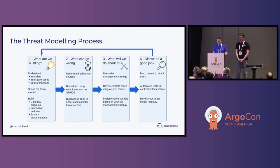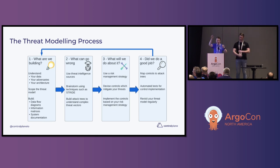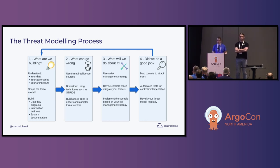'What will we do about it?' is the next question, and this is where we devise our controls. Everything has to link back to a risk management strategy — we have to devise controls which mitigate our risks within the context of this strategy. Finally, 'Did we do a good job?' — this is the iterative aspect. We can map controls to attack trees to see if any branches are not covered. We can write automated tests which test not the implementation of a control but its actual genuine effectiveness in a representative system. And finally, we can revisit our threat model regularly if the threat landscape changes.